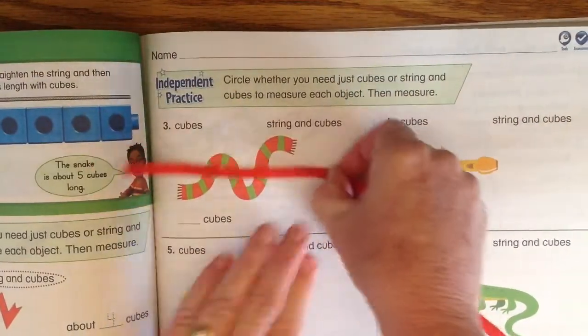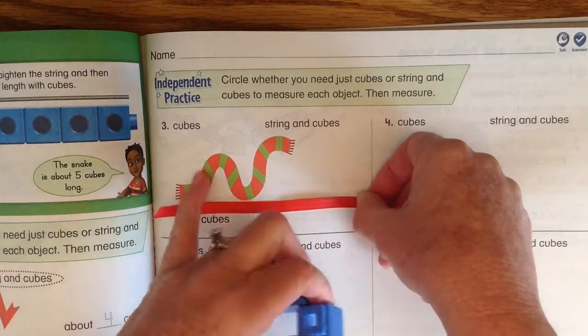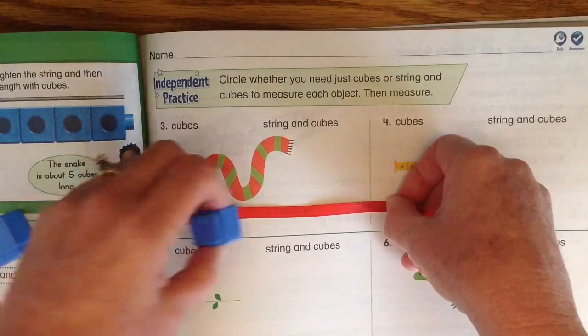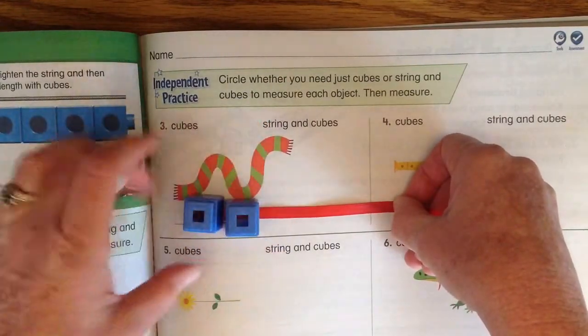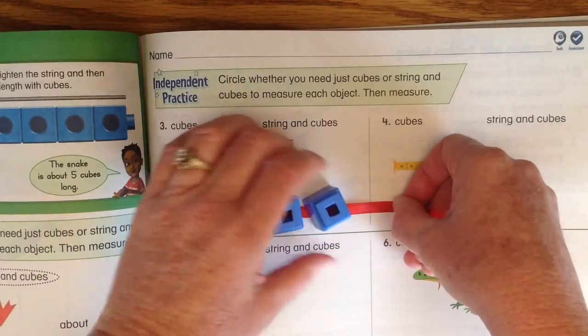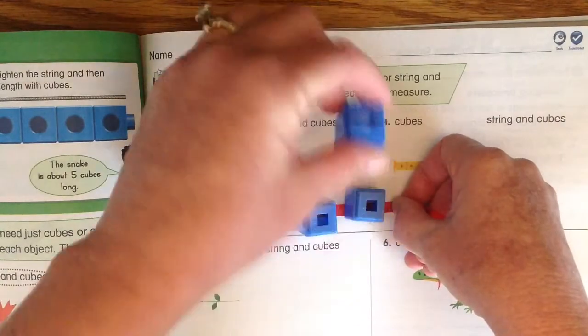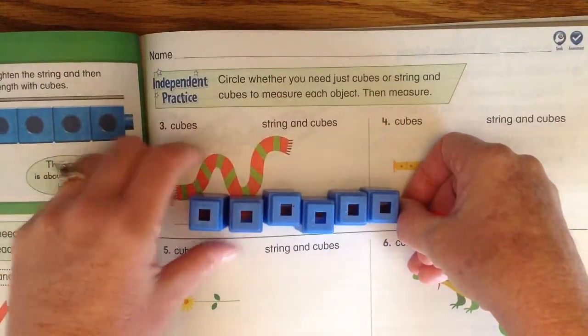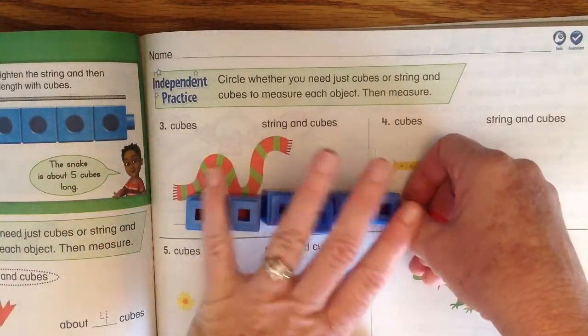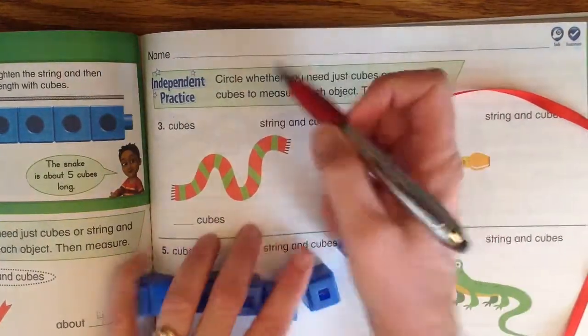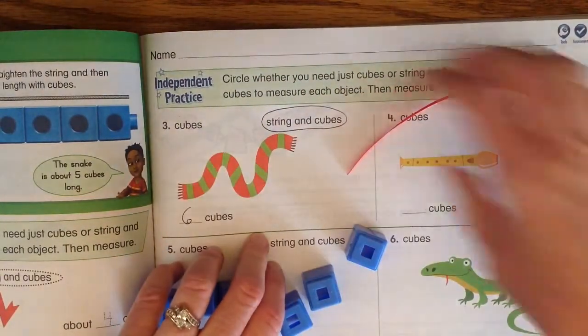So now I leave my thumb there, I straighten this out, and this is about how long the scarf would be if it was straightened out. So now we put the cubes on: one, two, three, four, five, and six. We can fit about six cubes on that scarf if it was straightened out. So we had to use string and cubes to find out that it's about six cubes long.